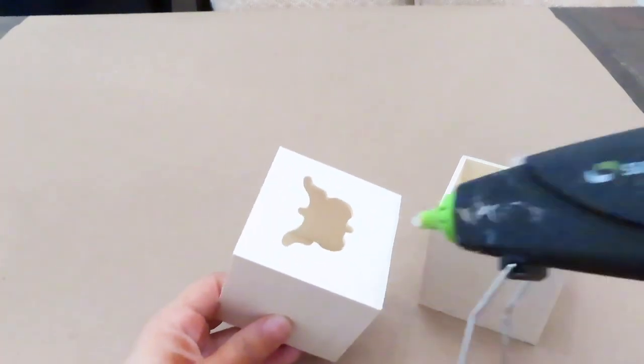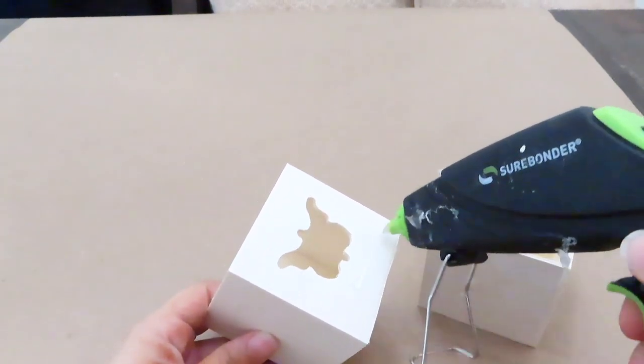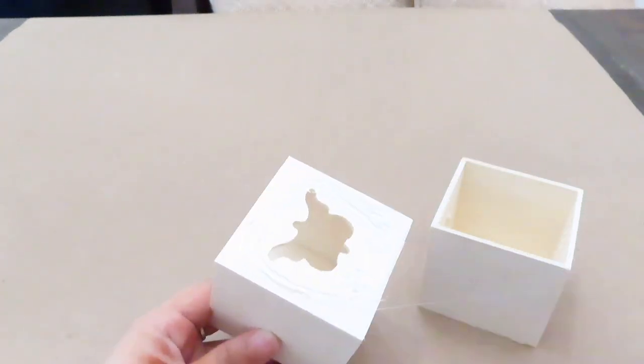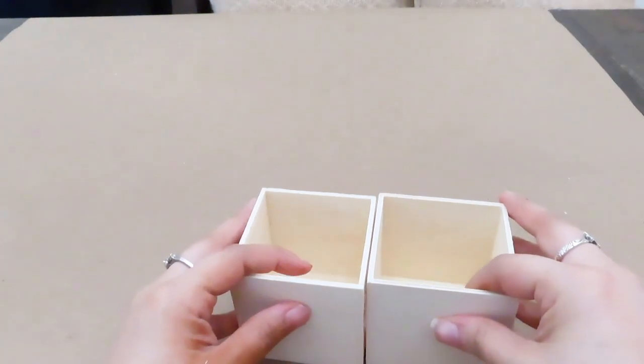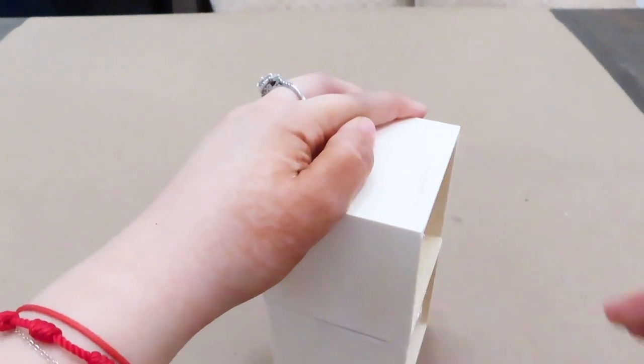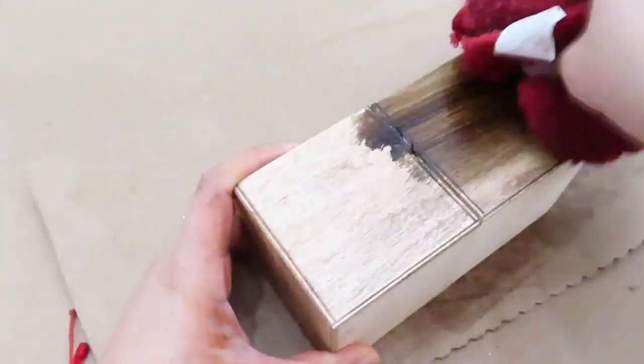For the second DIY, I'm going to be using two of the leftover drawers and I'm going to be hot gluing them together. Next step, I just started to stain the wood and I let it dry for at least 20 minutes.